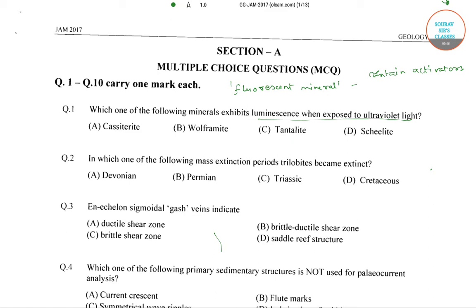These activators help the minerals to glow within a visible spectrum when exposed to ultraviolet light. So these fluorescent minerals glow within the visible spectrum when they are exposed to ultraviolet light.